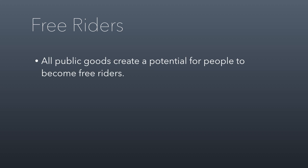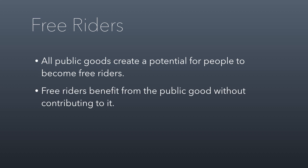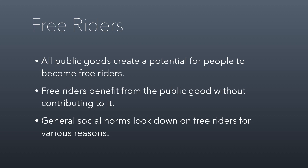The Nash equilibrium plays into that donation choice in a way we'll explore in class. All public goods create a potential for free riders — that's the nature of public goods being non-excludable. This is the big controversy over the income tax: lower-income people don't pay income tax, and for many others that feels like free riding. Free riding means benefiting from the public good without contributing to it. We have social norms to look down on free riders, but the more important question is: if a public good is funded by altruism, should we care if people free ride?